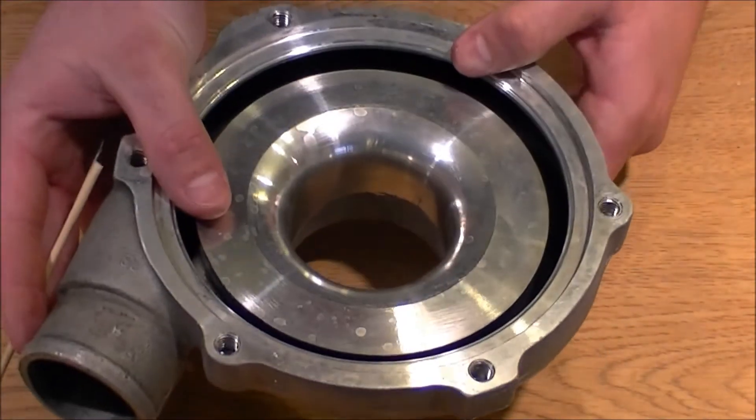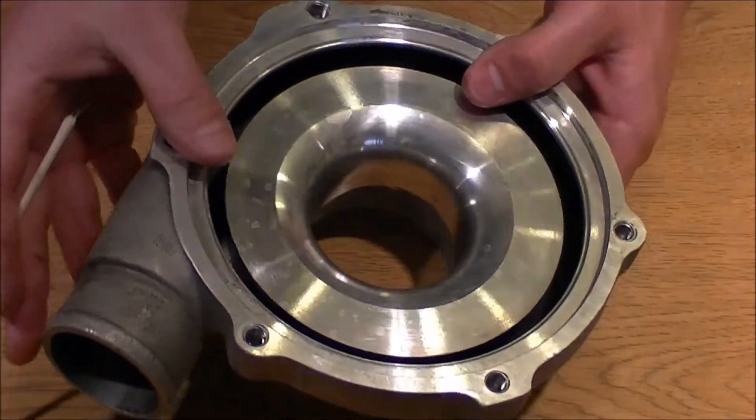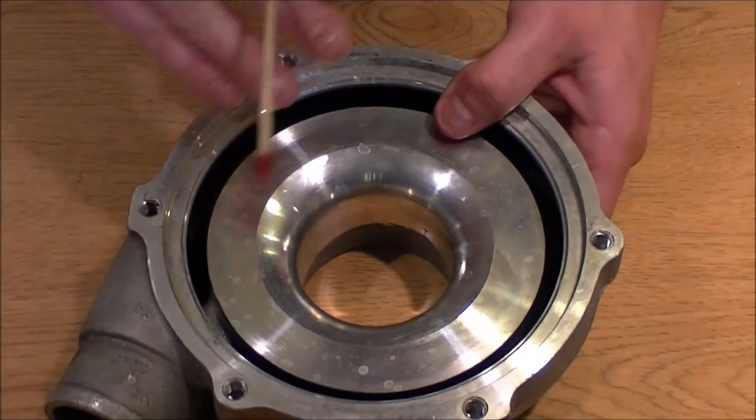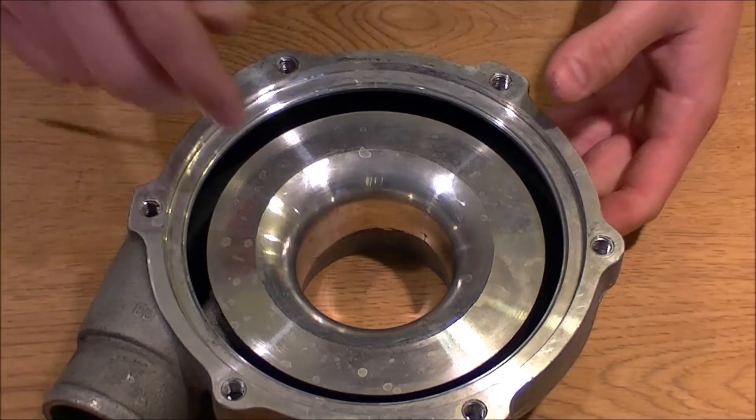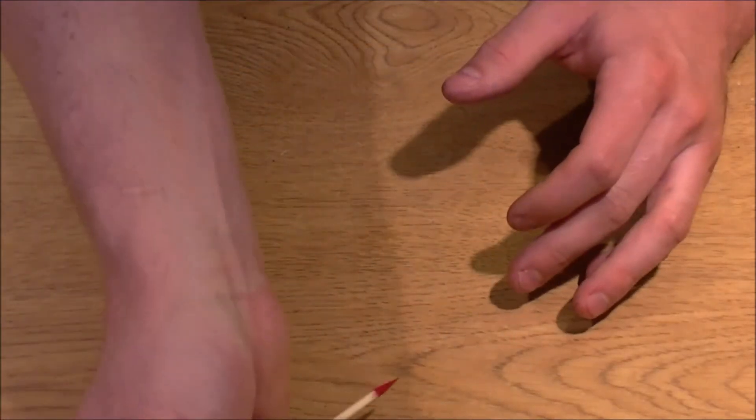I mean, you can't salvage the compressor wheel. If it's scraped too bad, it's done because there's certain air calculations in there that have to be met in order to build proper boost.